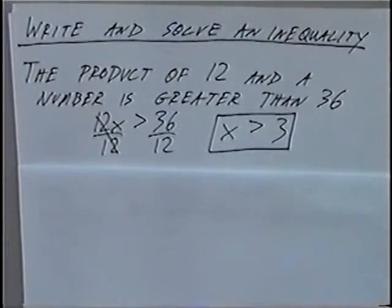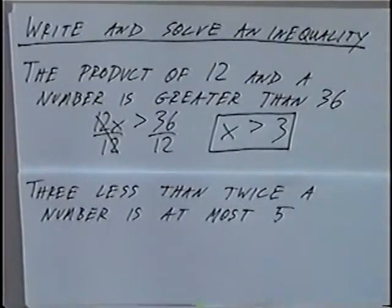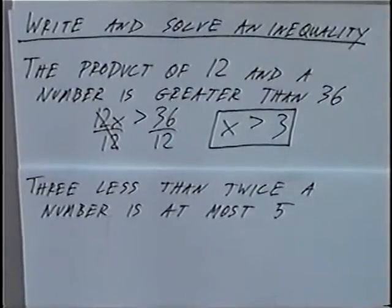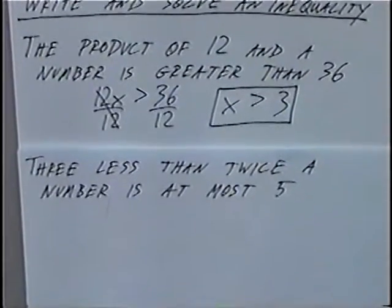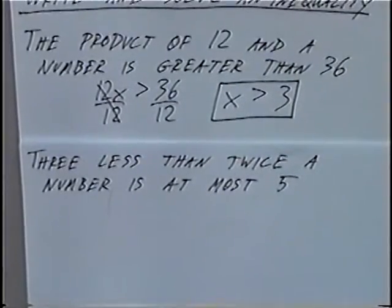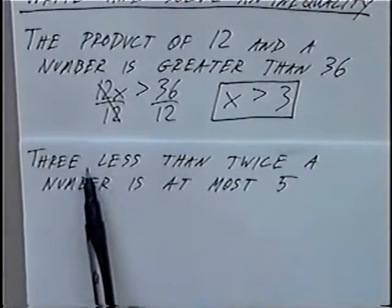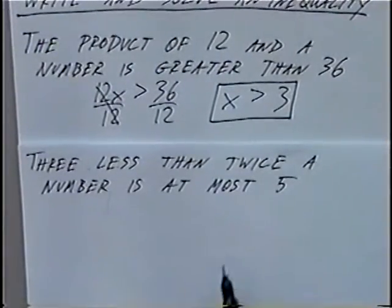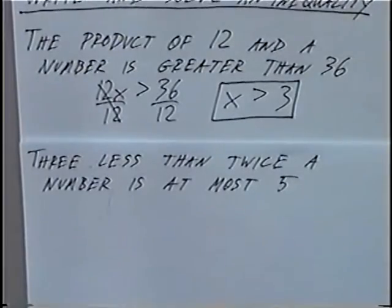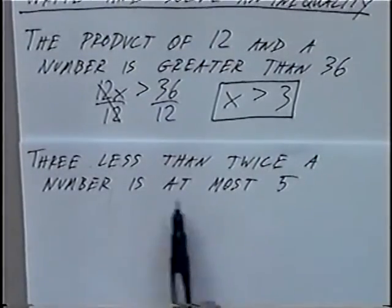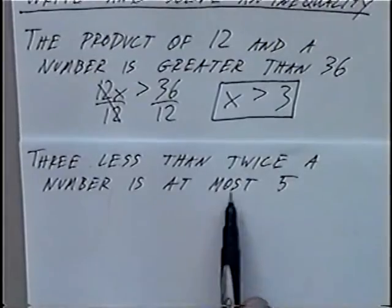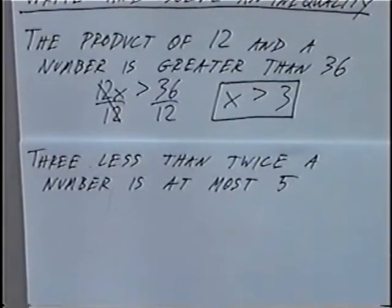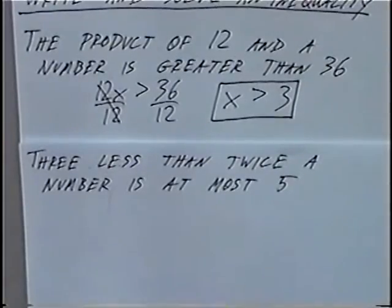Second and last question: 3 less than twice a number is at most 5. The phrase 'less than' without 'is' means subtraction. 'Twice a number' means to double, or multiply by 2, and 'a number' can be replaced with variable x. 'Is at most 5' means the biggest it can be is 5, so the answer must be 5 or less.